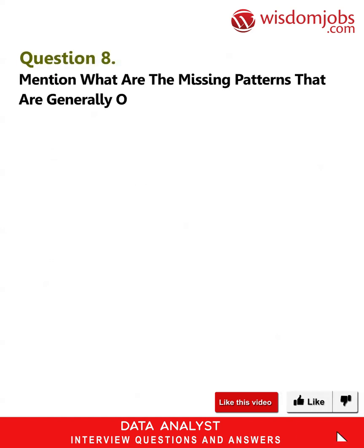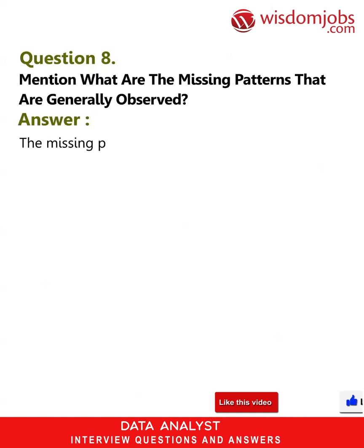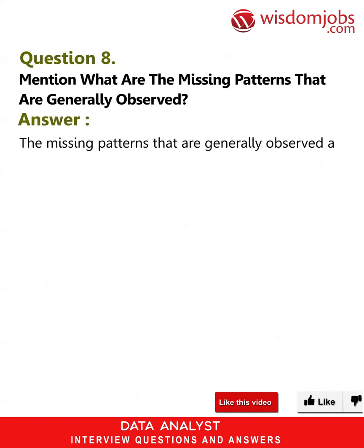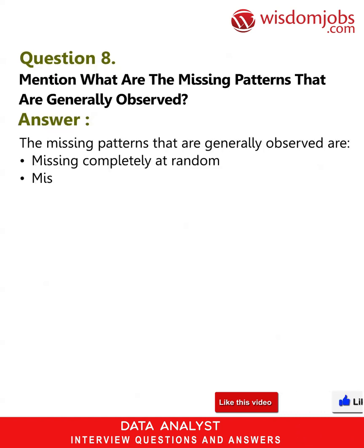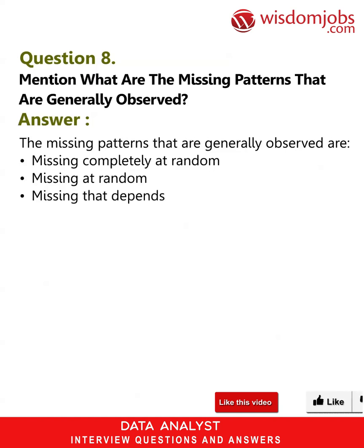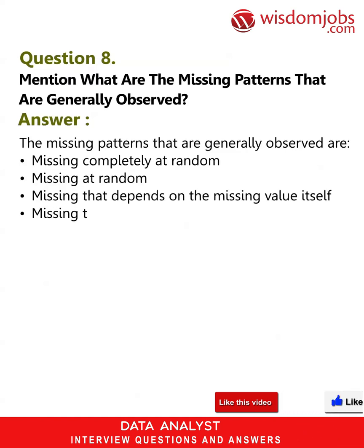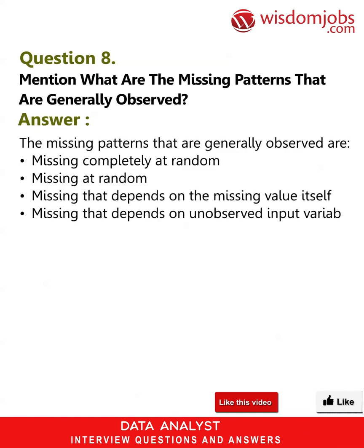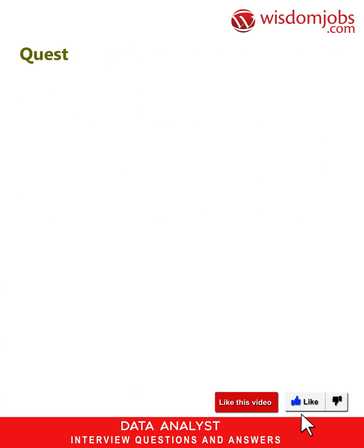Question eight: What are the missing patterns that are generally observed? Answer: The missing patterns generally observed are: missing completely at random, missing at random, missing that depends on the missing value itself, and missing that depends on an unobserved input variable.